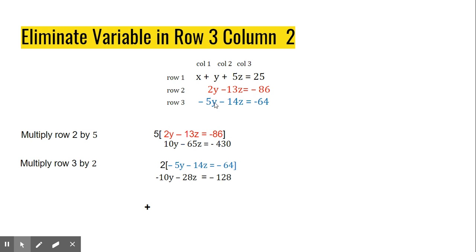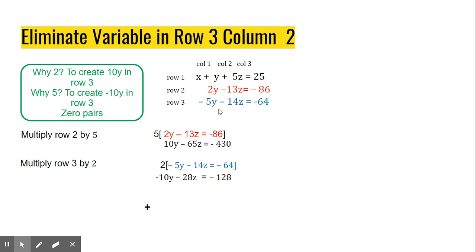I'm going to multiply Row 2 by 5. That creates 10y minus 65z is equal to negative 430. And then I'm going to multiply Row 3 by 2. That gives me negative 10y minus 28z is equal to negative 128. So you see, I have created my zero pairs for the variable in this position. I have to multiply two rows to do that, but that's perfectly legal.